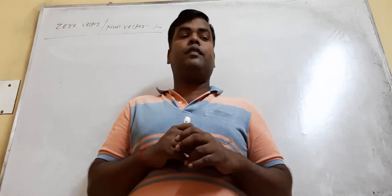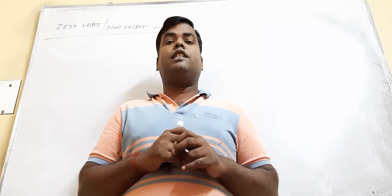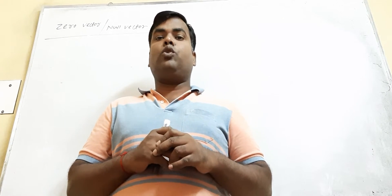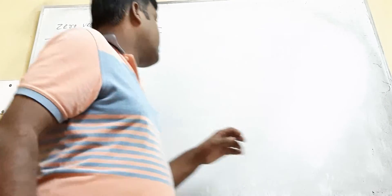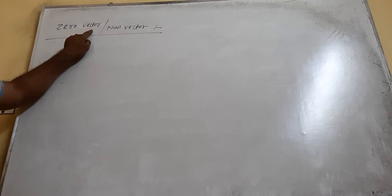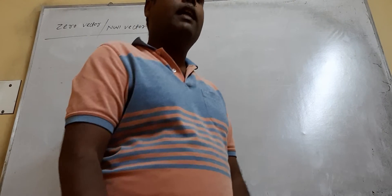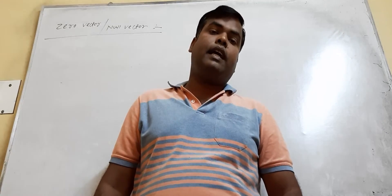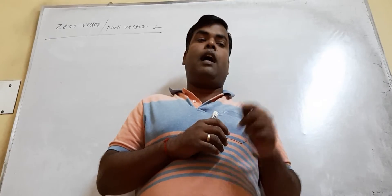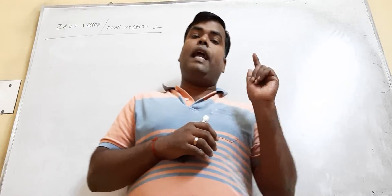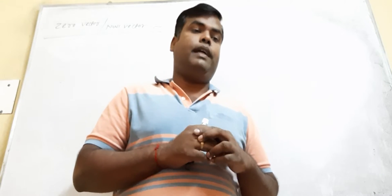Dear children, today we will discuss zero vector or null vector. A zero vector is a vector having zero magnitude and arbitrary direction. A vector having zero magnitude and arbitrary direction is called a zero vector or null vector.